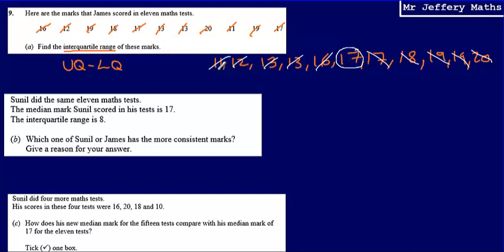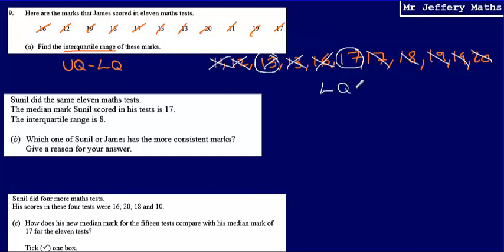So if I then look to the left of the median, and halve the numbers which are to the left, that will find me the quarter-way point. So I'm going to cross off a number from each end of this left-hand list, and that leaves me with a lower quartile of 13. So lower quartile equals 13.